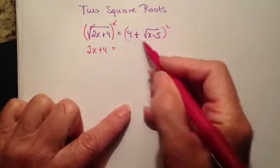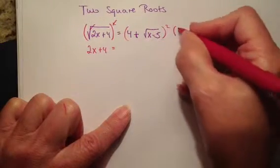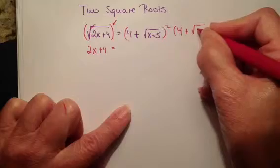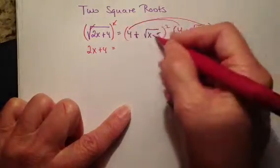But on this side, if I have something being squared, I have to write it out twice. So this is going to be 4 plus the square root of x minus 5 twice. Because now I'm going to have to FOIL this out.